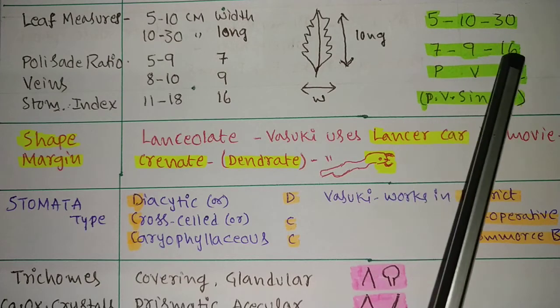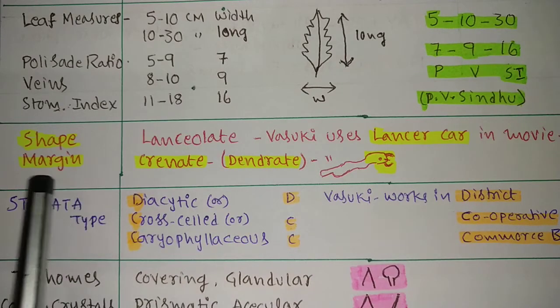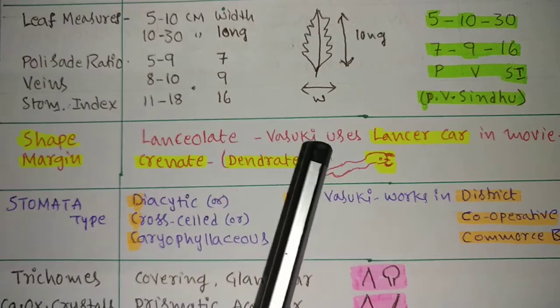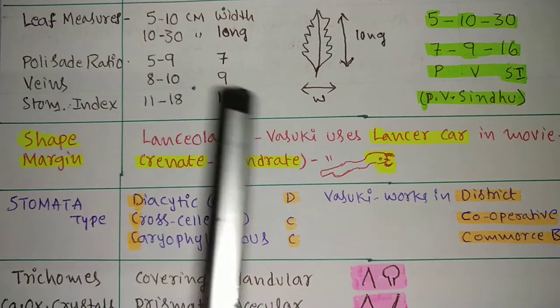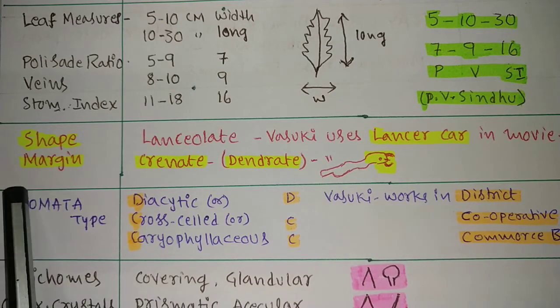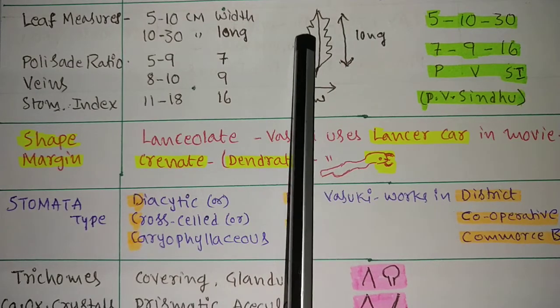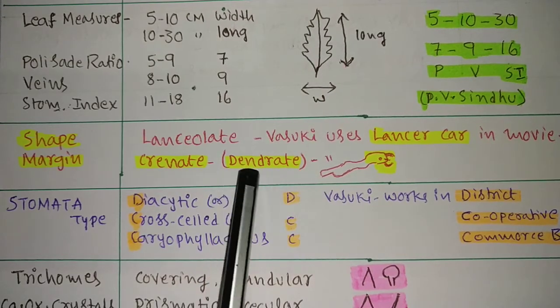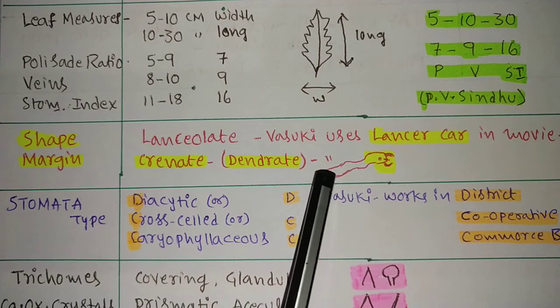Next, shape. Shape of the leaf is lanceolate. Vasuki uses a lancer car to travel in the movie. And margin is crenate or dentate. Dentate means teeth, just like Vasuki is a snake and consists of dentate teeth.